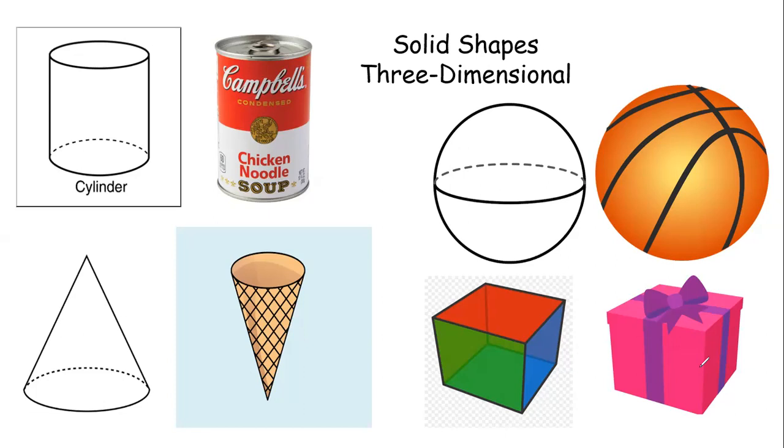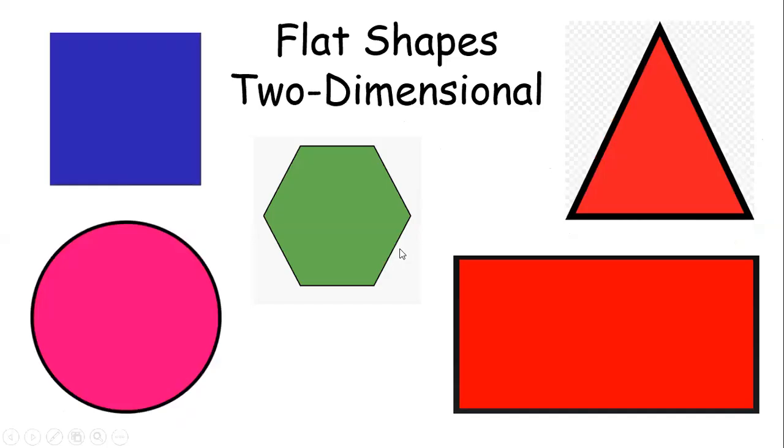They're not like our 2D shapes because they can take up space. So those are our shapes. And we are going to practice more with them. But can you tell me these are called, one more time, solid shapes or 3D shapes? And our other shapes are called flat shapes or 2D shapes.